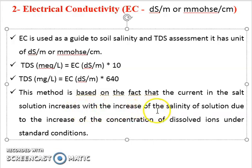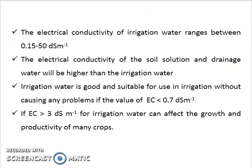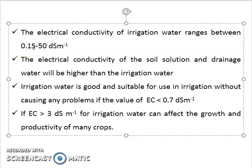The electrical conductivity of a solution increases with the increase of salinity of the solution, due to the increase of concentration of dissolved ions under standard conditions. The electrical conductivity of irrigation water ranges between 0.15 dS/m for fresh water and 50 dS/m for seawater. When the EC of the soil solution is less than 0.7 dS/m, water productivity may be affected.